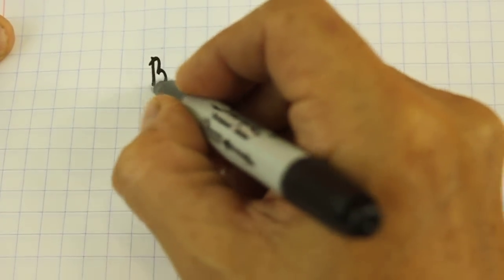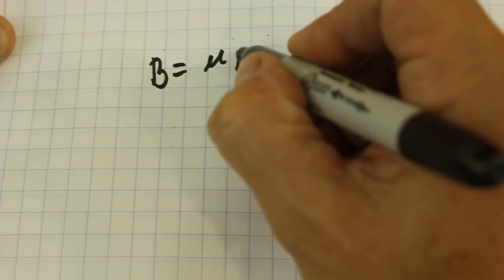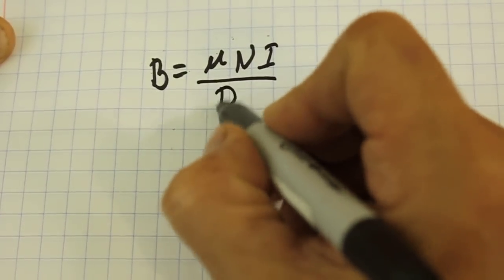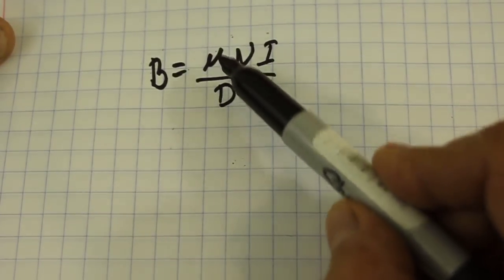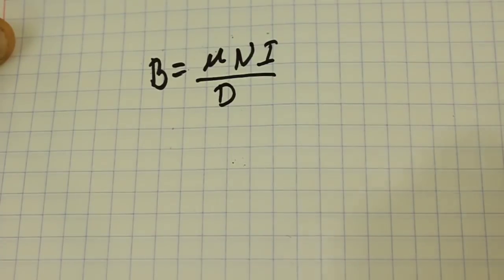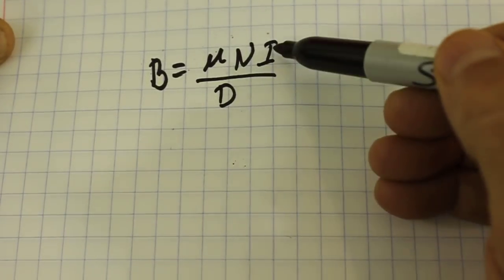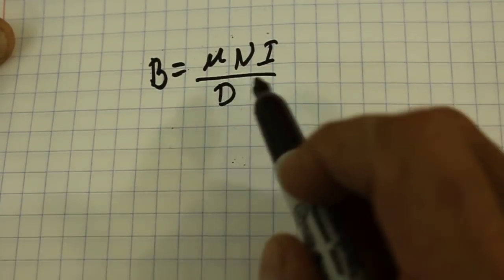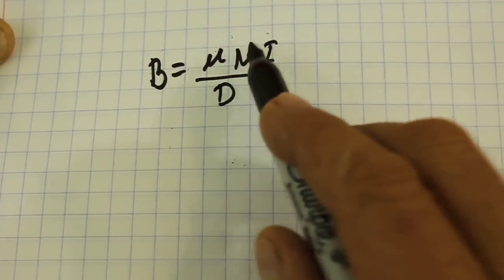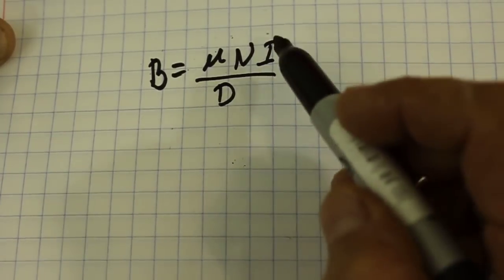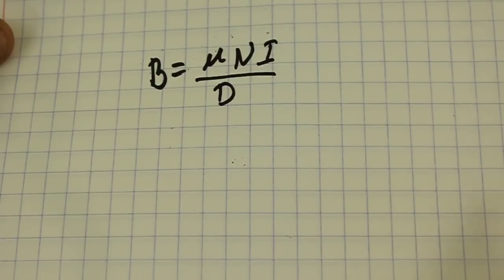The formula for the magnetic field of a coil is the magnetic permeability times the number of turns times the current in the coil divided by the diameter. The permeability and the diameter are constants so we can only play with the number of turns and the current. So if we want less current then we have to increase the number of turns, and in this way if we have more turns we need to use finer wire which has a higher resistance and then automatically we will have less current in the coil.